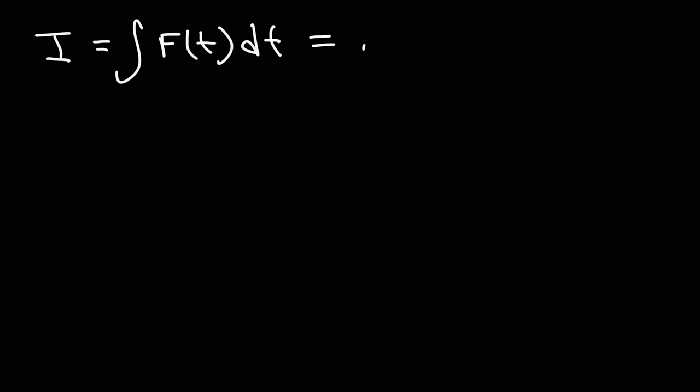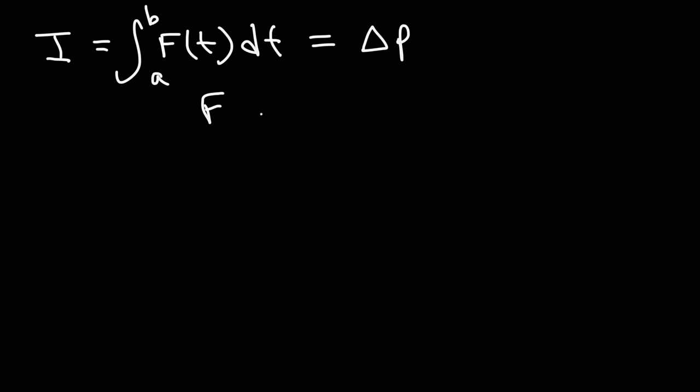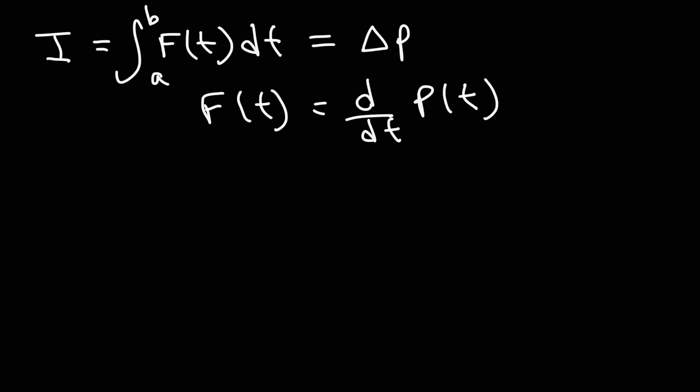The impulse is equal to the change in momentum. So this definite integral, integrated from A to B, gives you the change in momentum. If you differentiate both sides of this expression, you'll find that force is the derivative of the momentum function. So if you have momentum as a function of time and you take its derivative, you get the force as a function of time.